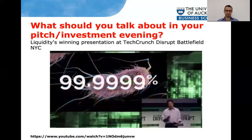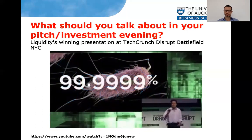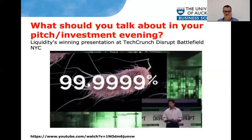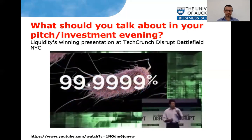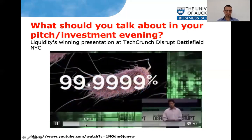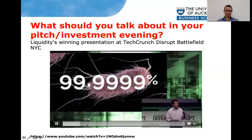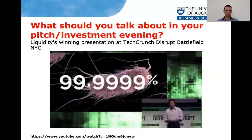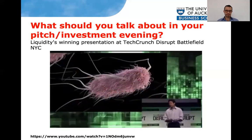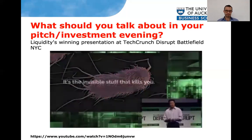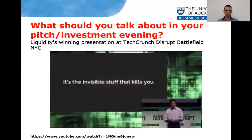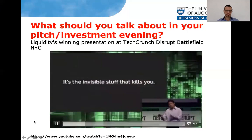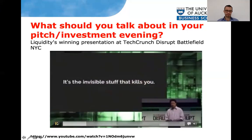One billion people on the planet cannot get dependably safe drinking water because of them. Now, why is this so hard? Here's a number to remember: six nines — 99.9999%. This is a commonly accepted standard for bacteria reduction in order to get safe drinking water; it's what the EPA uses. This is a very hard standard because it means fewer than one out of a million bacteria can make it from the source of the water to your lips. This is compounded by the fact that you can't see this stuff — these germs are not visible to the naked eye. It's the invisible stuff that kills you.